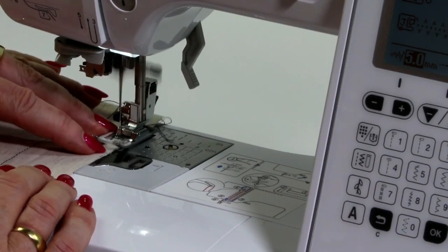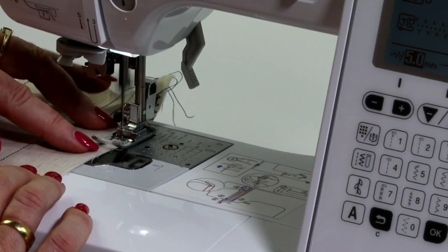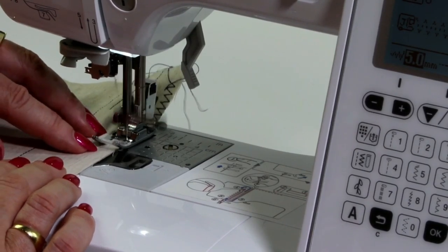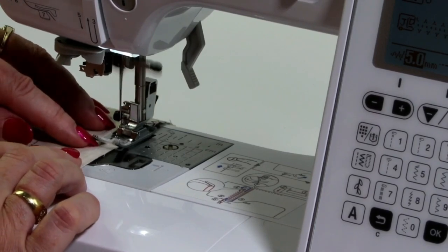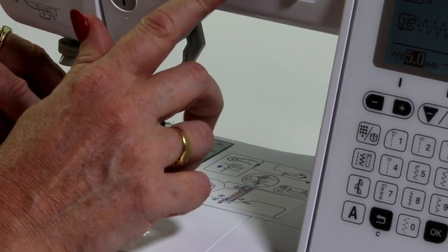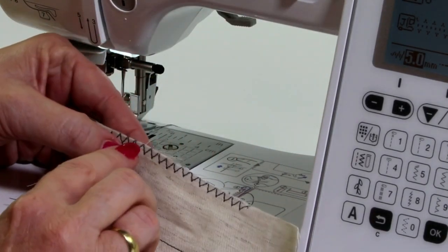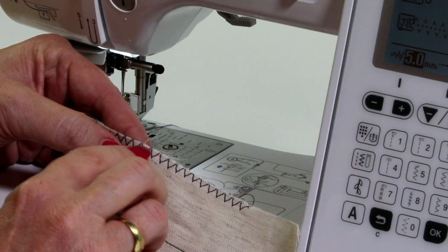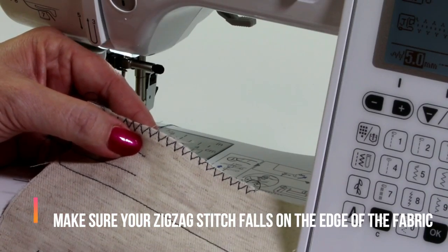Now what I'm going to align is to make sure that the right hand swing of my needle is going off the fabric. Now I'll show you what I'm doing. So this is what I'm wanting is for it to be sitting right on that edge. So that's my three-step zigzag.